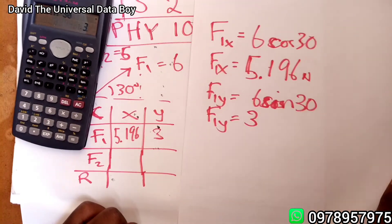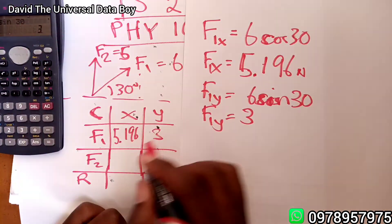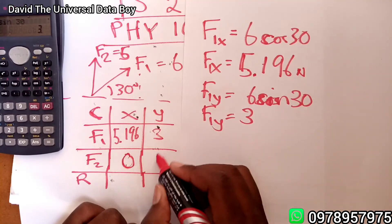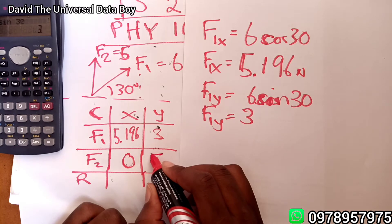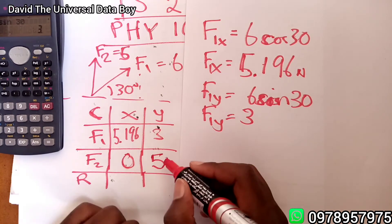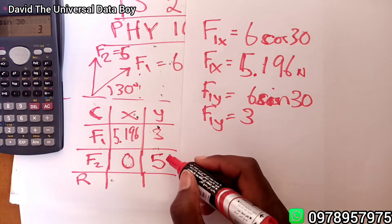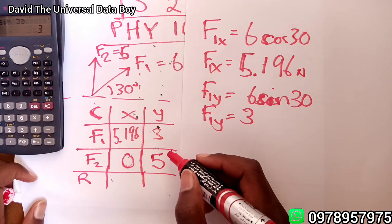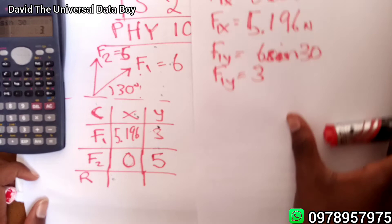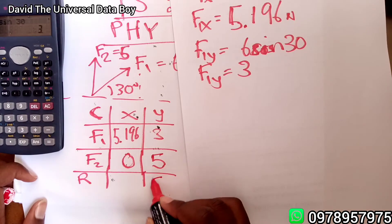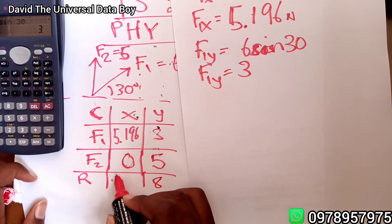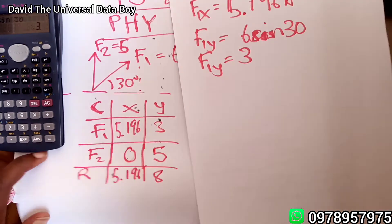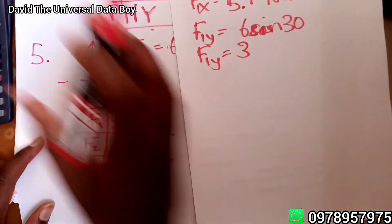F2 in the x is zero, since F2 acts purely in the y-direction. F2 in the y is 5 newtons. Adding the components: the total force in y is 3 plus 5 equals 8 newtons, and the total force in x is 5.196 newtons.